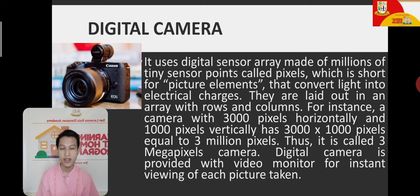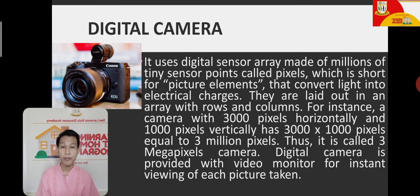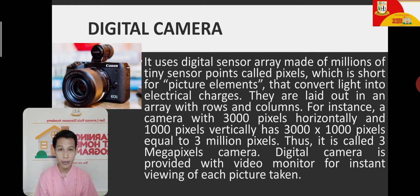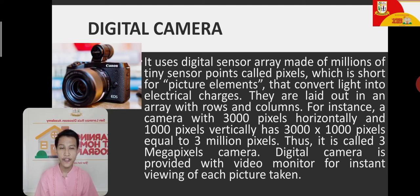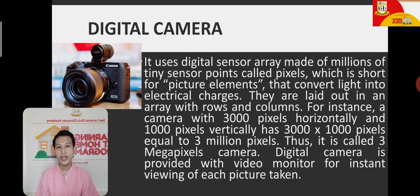Imagine the cameras in our cell phones — the highest may be 64 megapixels or even more. So 64 megapixels means 64 million pixels, or 64 million rows and columns combined to form an image. With a digital camera, no film is needed. Pixels convert light into electrical charges to save the image. Another feature of the digital camera is that you can instantly view the picture you just took, because it has a video monitor.